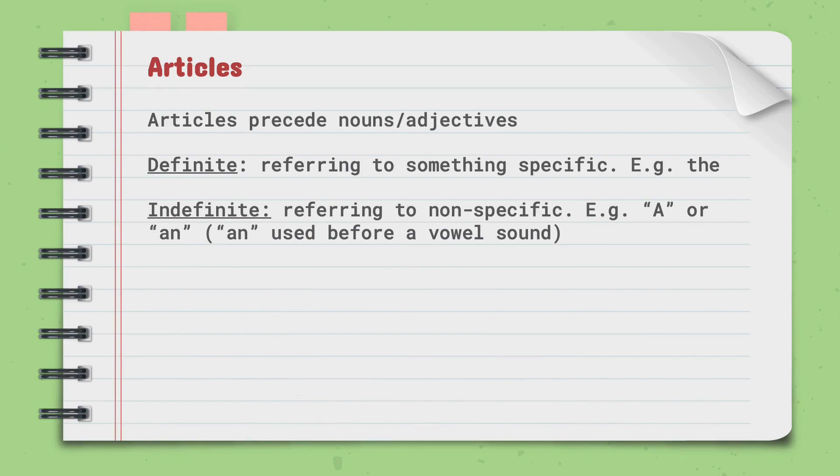The next part of speech is articles. Articles precede nouns or adjectives. The definite article refers to something specific, for example, the. The indefinite article refers to non-specific, for example, a or an. An is used before a vowel sound, where a is used before a consonant sound.